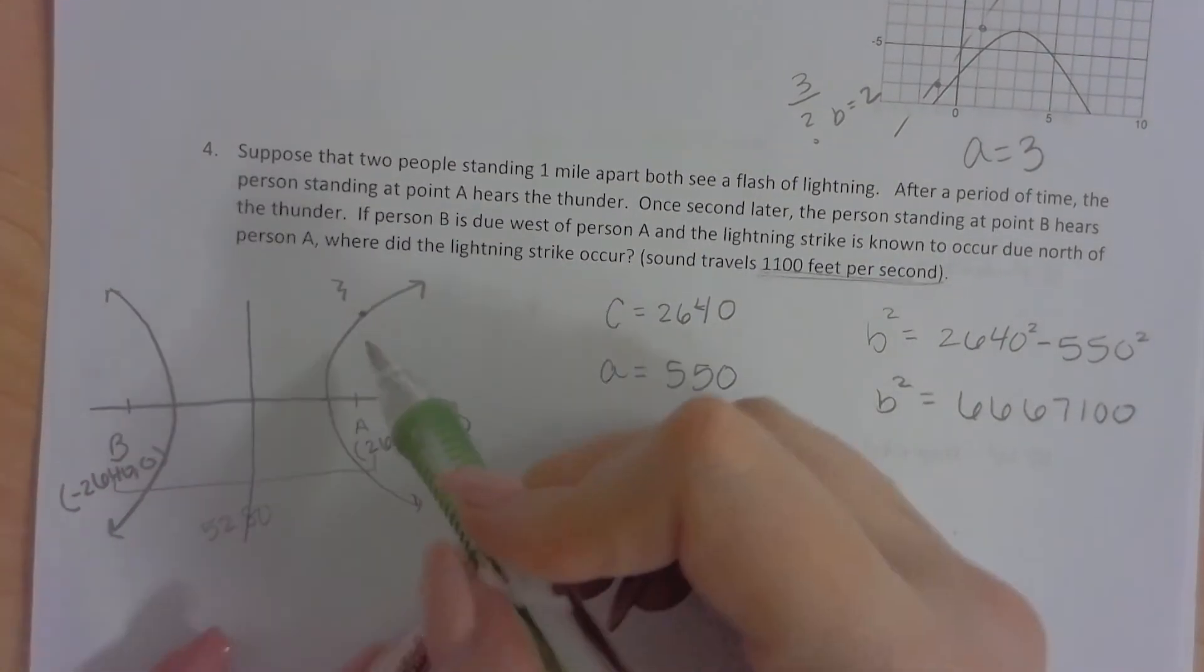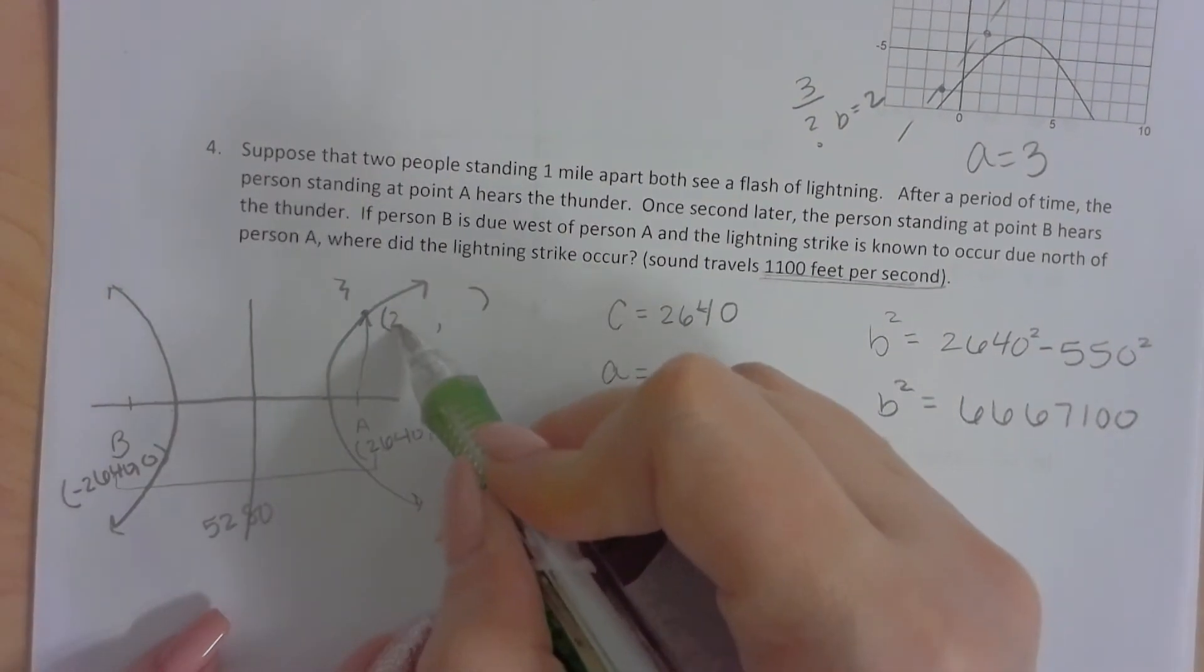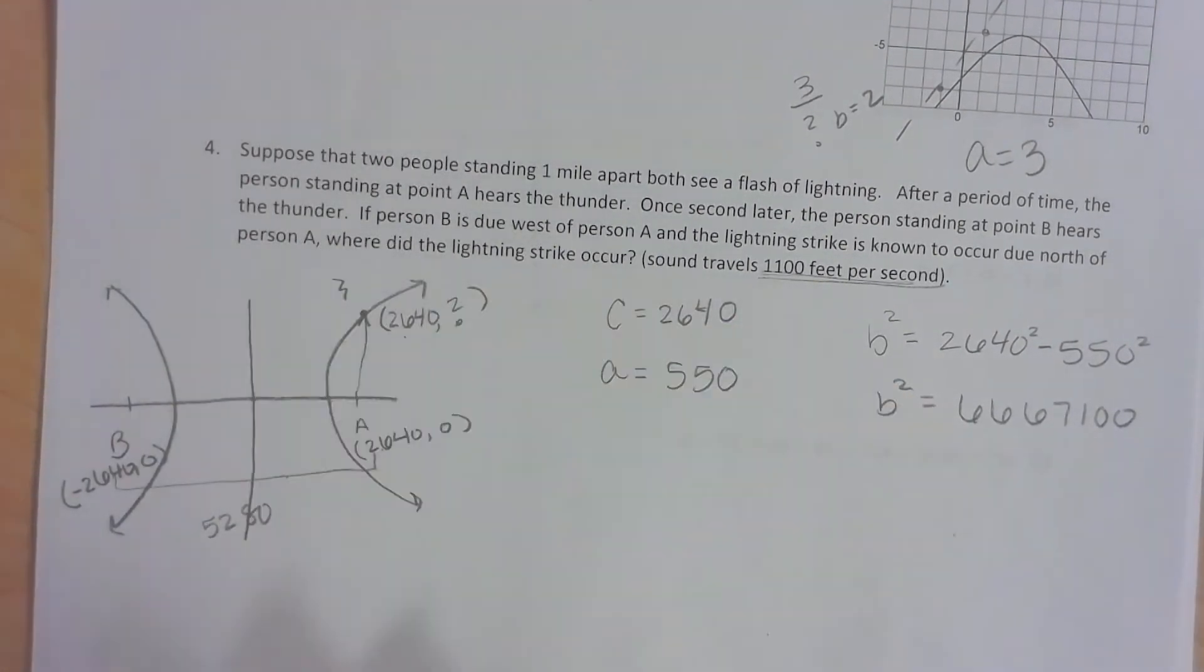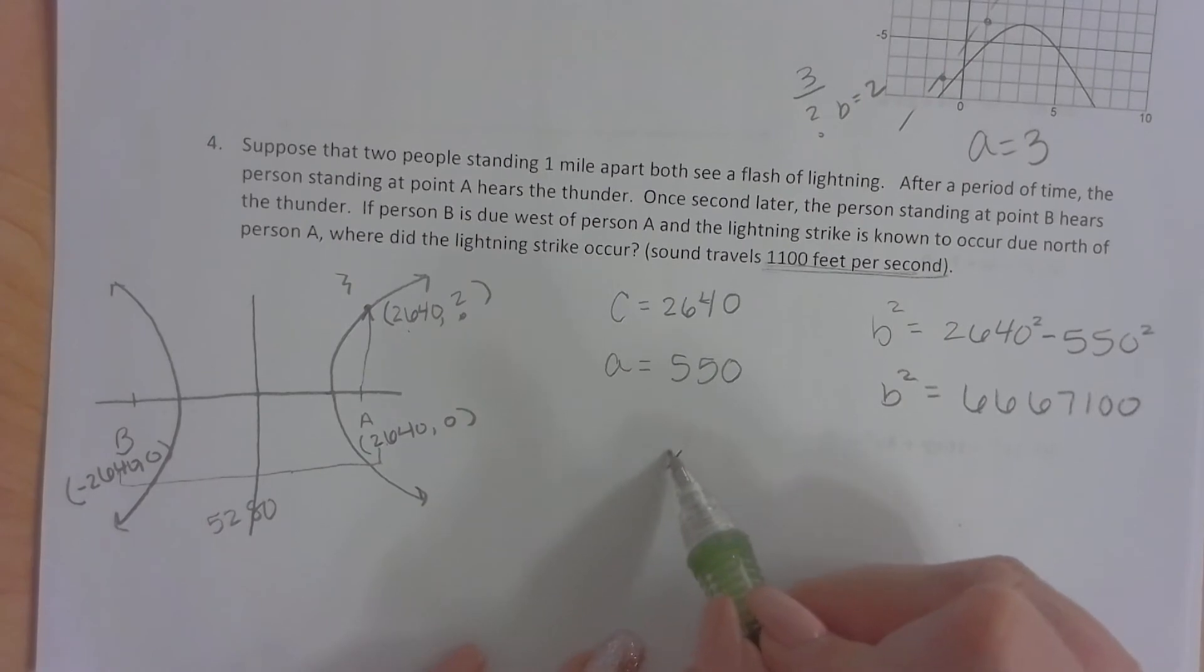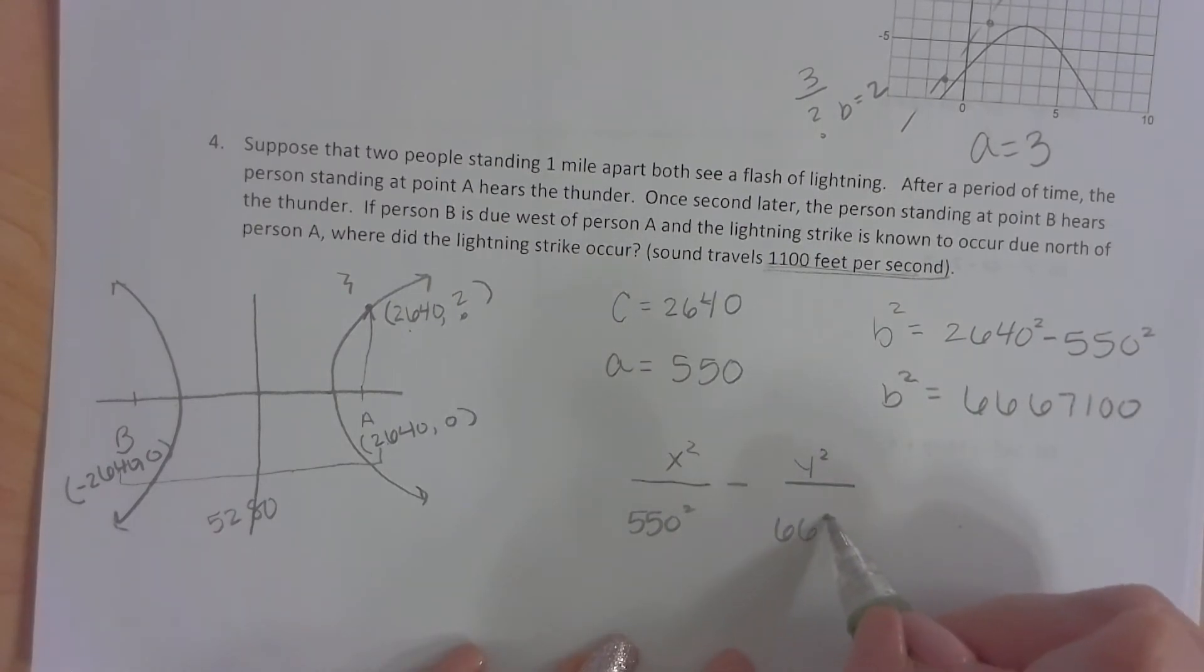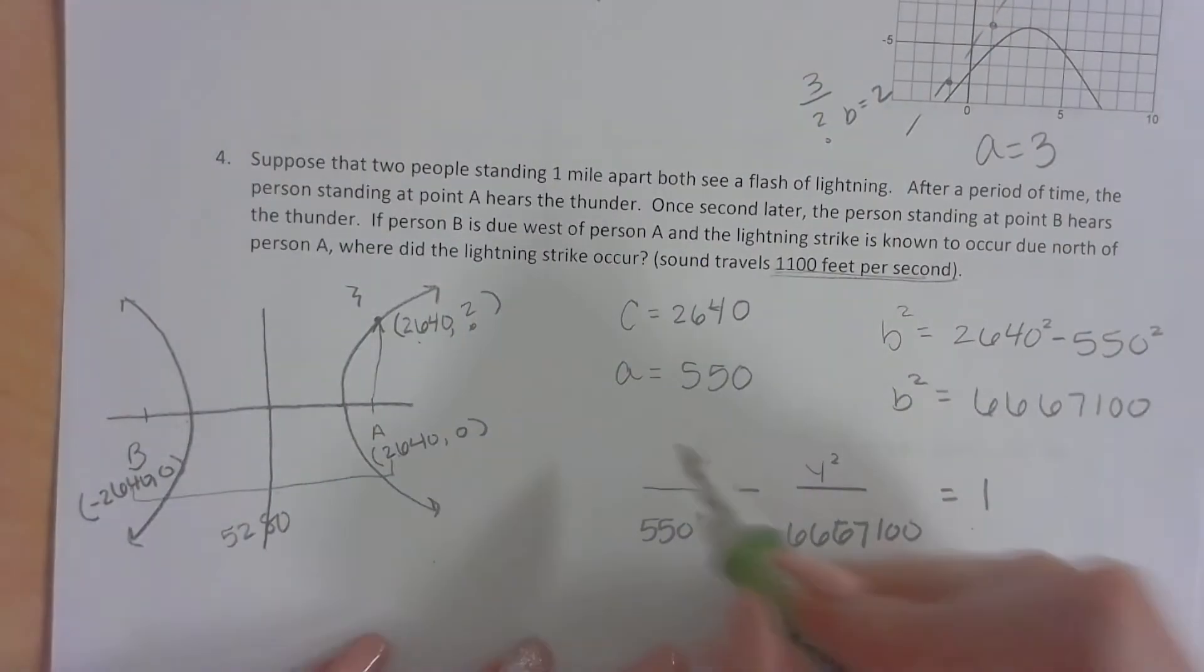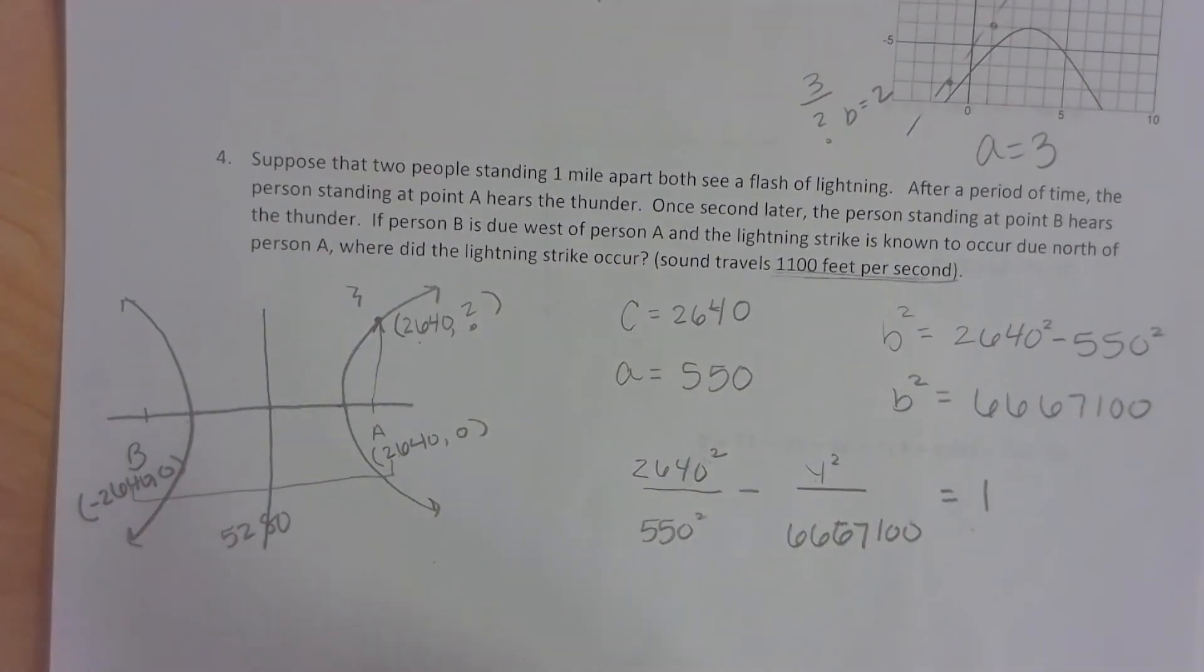All right. So we know b squared, we know a, we know c. Our whole goal once again is to figure out how far away this is, right? So if we wrote that as an ordered pair, the x would be 2,640. So essentially what we're trying to figure out is when x is 2,640, what is the y? So we're going to have to write our equation. So since this is opening left and right, the x is first. So we have x squared over a squared minus y squared over b squared equals 1. And like I said, the whole goal was to figure out what's y when x is 2,640.